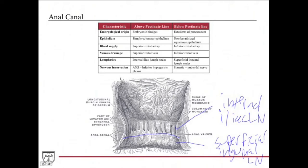So if a test question indicates it's an anal cancer found distal to, or beyond, the pectinate line and asks where it spreads, you would say the internal iliac lymph nodes.